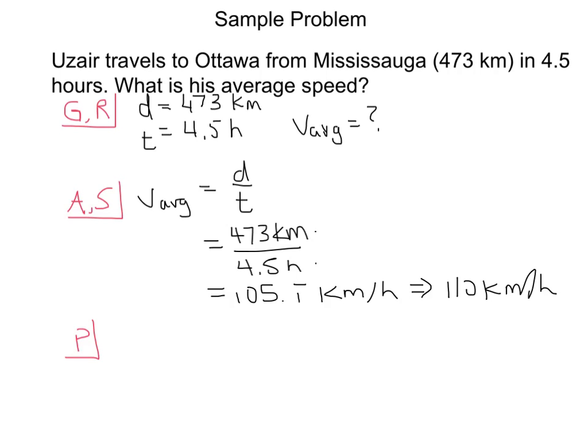So I need to write a therefore statement. So therefore, and I'm going to go back and answer the actual question. So Uzair's average speed is 110 kilometers per hour. And I have no idea if he traveled a fairly consistent speed, or if sometimes he traveled 120 kilometers per hour, sometimes he traveled 100. We have no idea what happened between point A and point B. We just know that the average speed throughout that time was 110 kilometers per hour.